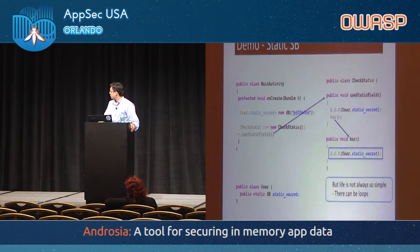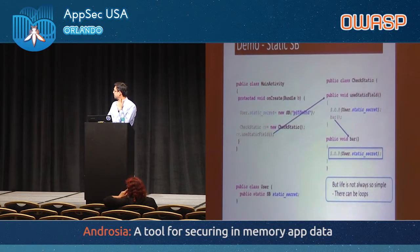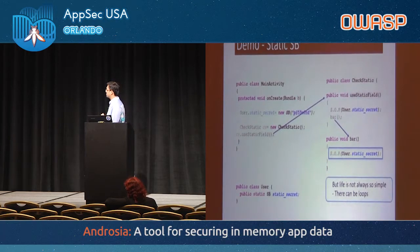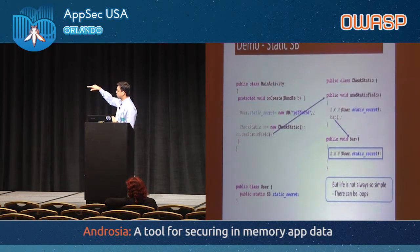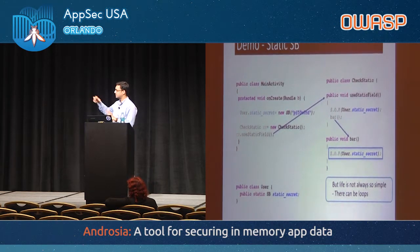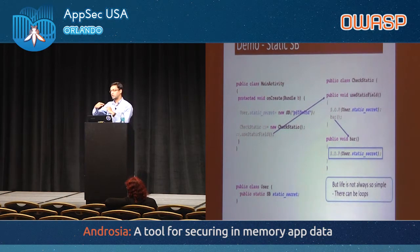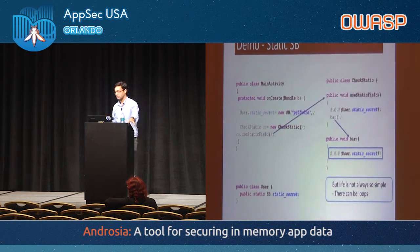However, life isn't always that simple — there can be loops. With static fields, if the bar method is inside a loop, you cannot instrument the code after the println statement for static_secret inside bar, because in the next loop iteration you'd be accessing the reset value rather than the original, breaking the program logic. So all these situations must be handled carefully.